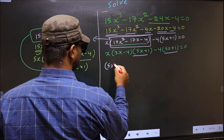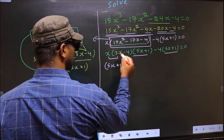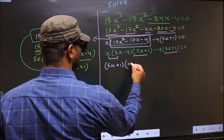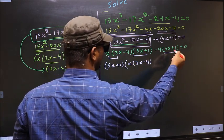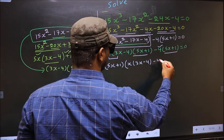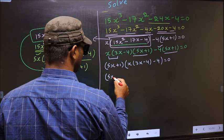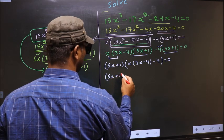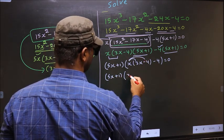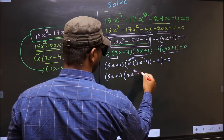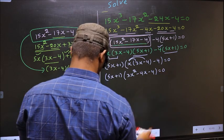So 5x plus 1 outside. Over here we are left with x times (3x minus 4), and over here we are left with minus 4, equal to 0. Now 5x plus 1 times — opening up the brackets — you get 3x² minus 4x minus 4 equal to 0.